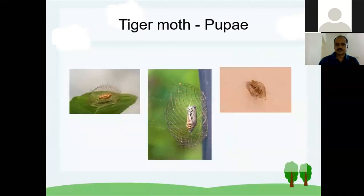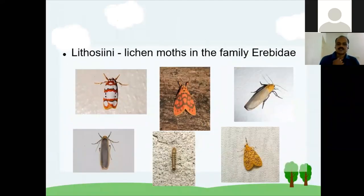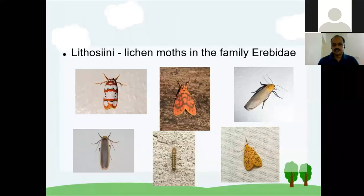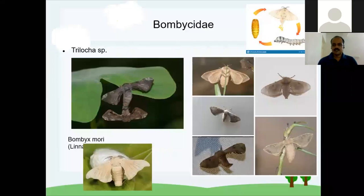Another colorful group is the lichen moths or Lithosiini tribe — you may see these even in cities coming to lights at home. Unlike most moths, in their early stage they don't feed on plants or leaves. They lay eggs on wet floors, wet walls, or wet tree barks and eat lichens and fungus. So not all moths breed on leaves — some survive by eating fungus or lichens.